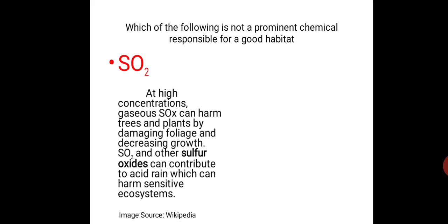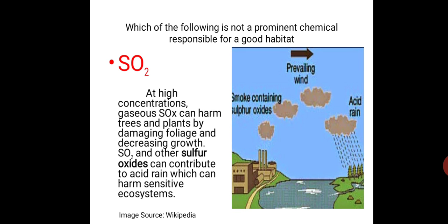At high concentration, gaseous sulfur dioxide and oxides of sulfur can harm trees and plants by damaging foliage and decreasing growth. Sulfur dioxide can contribute to acid rain, which can harm sensitive ecosystems. SO2 is released mainly by burning coal or diesel; it goes into the atmosphere and mixes with rain to form H2SO4 (sulfuric acid), which is harmful. Therefore, sulfur dioxide is not a prominent chemical responsible for good habitat.